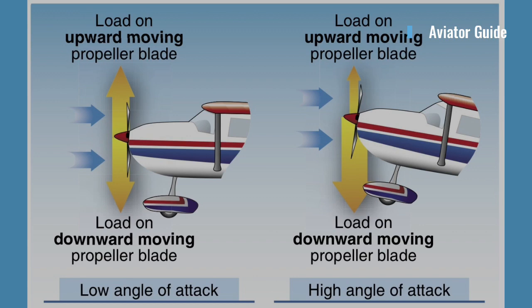Asymmetric loading, also known as P-factor: when an aircraft is flying at a high angle of attack, the bite of the downward moving blade is greater than the bite of the upward moving blade. This moves the center of thrust to the right of the prop disc area, causing a yawing moment toward the left around the vertical axis. This asymmetric loading is caused by the resultant velocity generated by the combination of the propeller blade's velocity in its plane of rotation and the velocity of air passing horizontally through the propeller disc. With the aircraft at a positive angle of attack, the right — or down-swinging blade viewed from the rear — passes through an area of resultant velocity greater than that affecting the left or up-swinging blade.